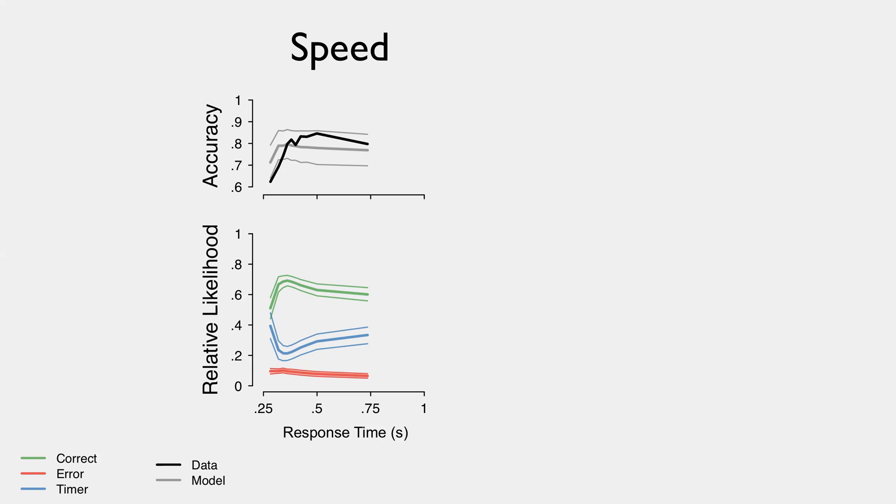Since the timer gives a random guess, it means that we're more likely to get an error response. And overall, we get the prediction that 27% of the trials are terminated by the timer.